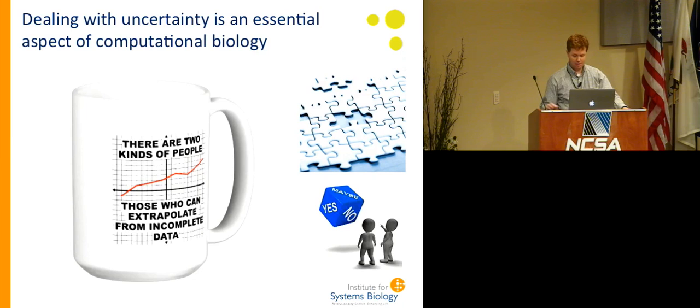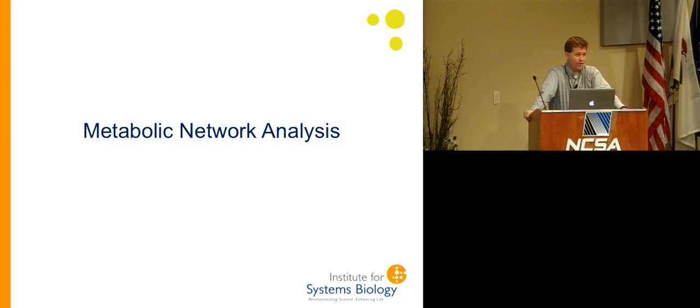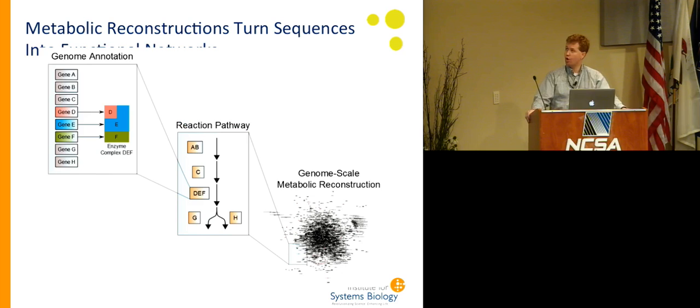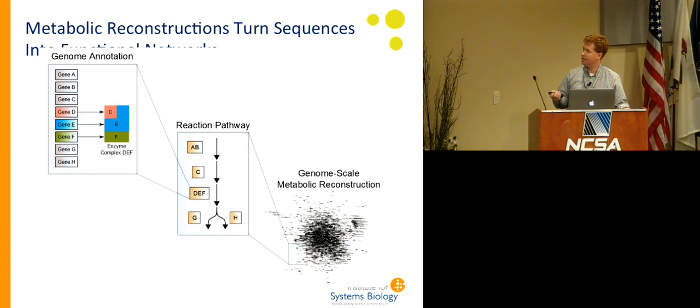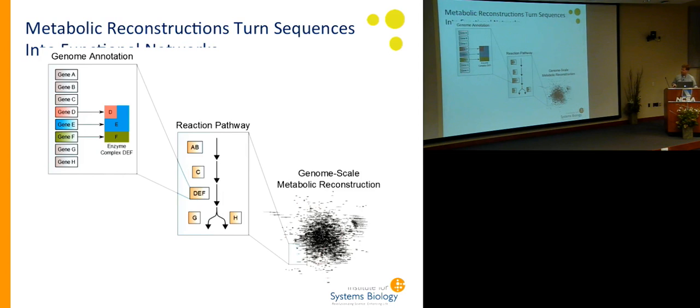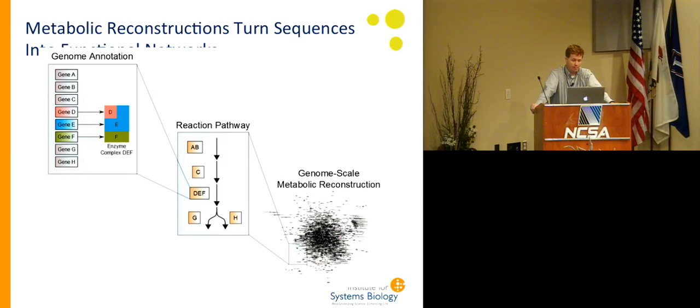So I'm going to talk about a couple of general areas that we've done quite a lot of work in, as have a number of others here in the audience. First I'll talk just a little bit about the tools of metabolic network analysis. Metabolic networks turn sequences into functional networks — basically the notion that we can start from a genome annotation, and from those by ortholog matching and so forth you can come up with reaction pathways and you can end up with what's called a genome-scale metabolic reconstruction. This is to try to represent as much as we know about the biochemistry that's in a particular organism.